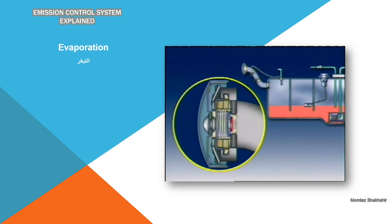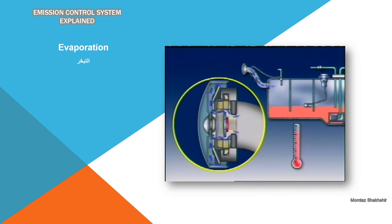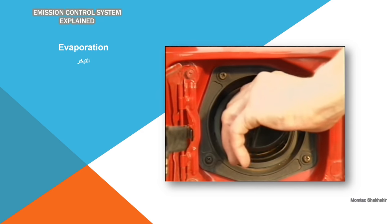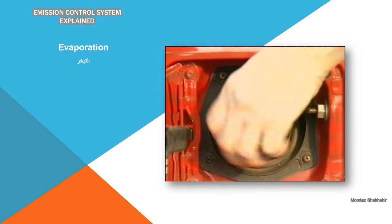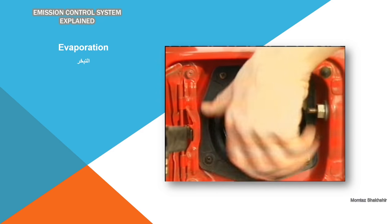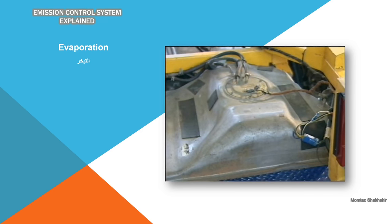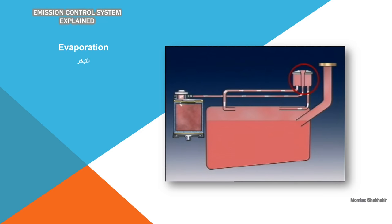The fuel cap may also incorporate a pressure relief valve. If the tank's internal pressure exceeds the set value of the relief valve, it can stop the tank from rupturing. Some modern caps have no valves at all and are completely sealed to stop the entry of air and water as well as the emission of fuel vapor. Modern tanks also contain an expansion volume, either directly in the shape of the tank or in a separate chamber connected to the fuel tank by tubing.